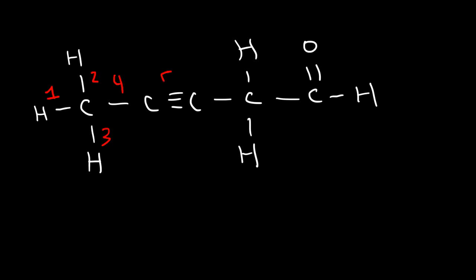I'm going to give you a more complicated structure. Determine the number of sigma and pi bonds in this compound. All you've got to do is count the number of bonds to get the sigma bonds: one, two, three, four, five, six, seven, eight, nine, ten, eleven. So there are eleven sigma bonds. The triple bond has two pi bonds, the double bond has one. So we have a total of three pi bonds.